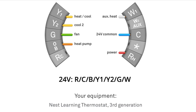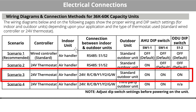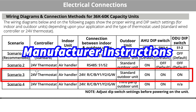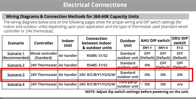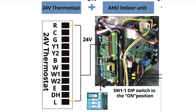This is what confused me: in Scenario 4, it talks about a third-party outdoor unit, and I initially thought 'third party' meant a third-party thermostat — no, the third party refers to the outdoor unit. You are Scenario 3, so go with Scenario 3. It really doesn't affect the indoor unit, but it does affect the outdoor unit.